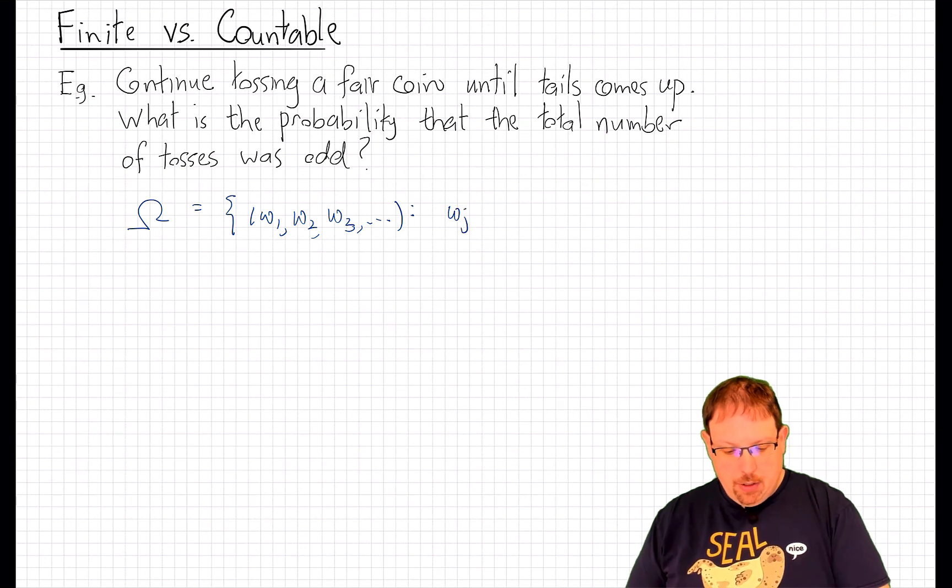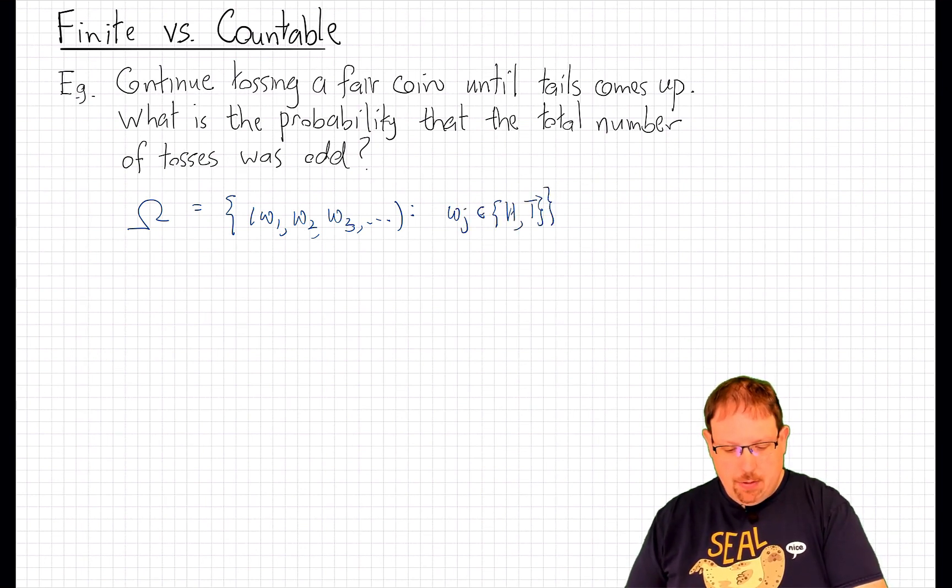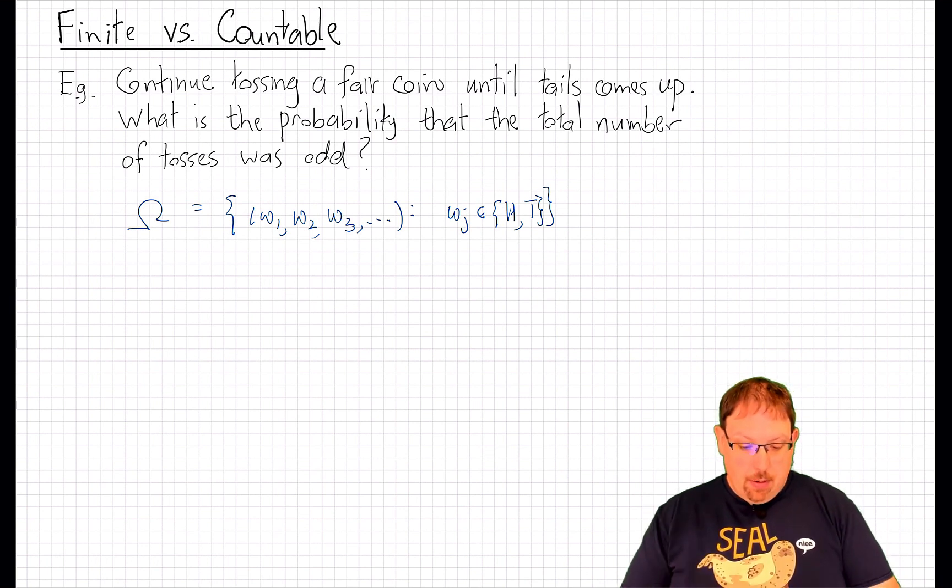That is, where each term in the sequence is either a heads or tails. Now the question that's being asked here is, if I keep tossing a coin until tails comes up, what's the probability that the total number of tosses until tails comes up was an odd number?